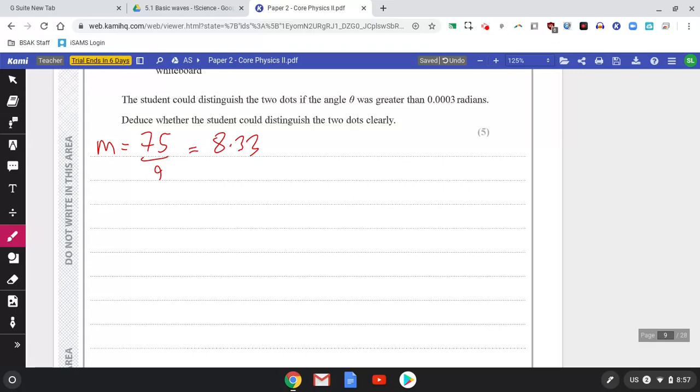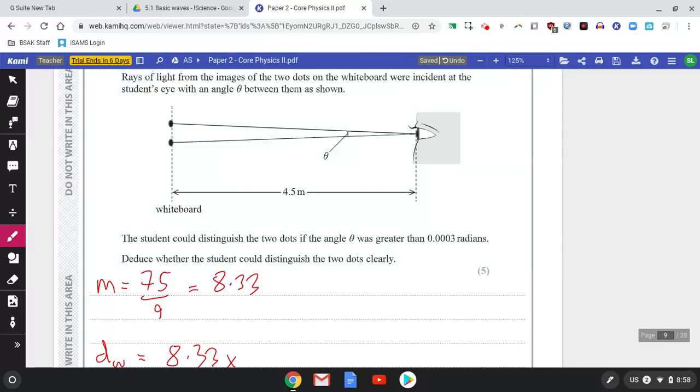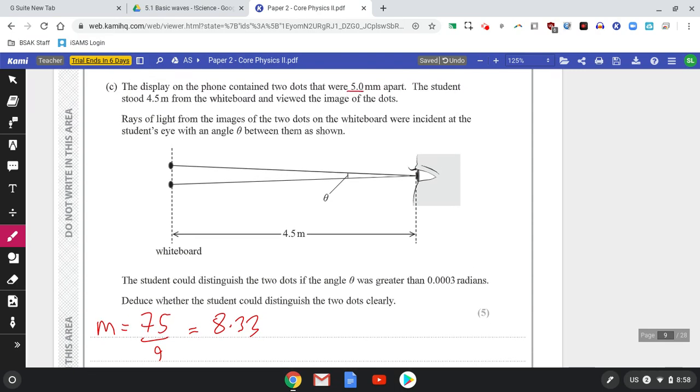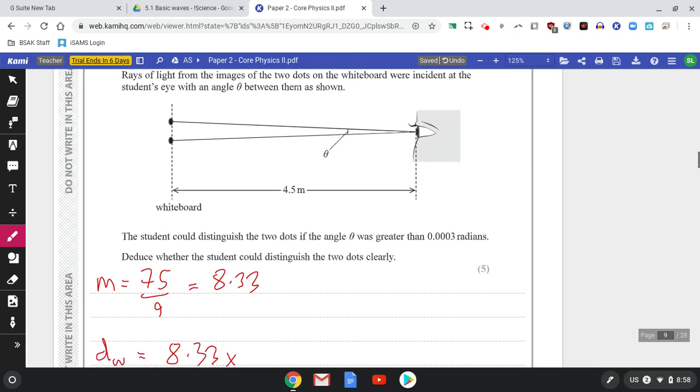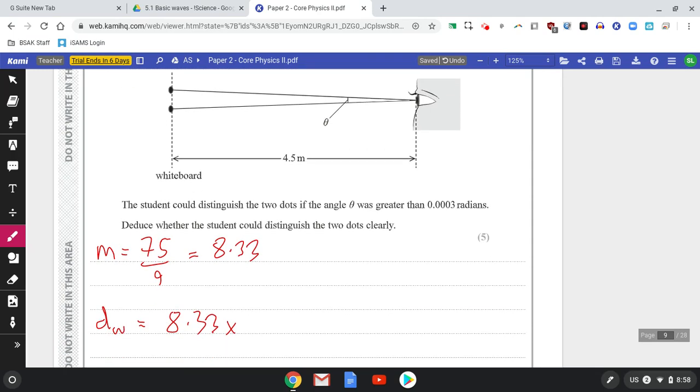So the distance between the two dots on the whiteboard is magnification multiplied by the original distance between them, which was five millimeters. On the phone they're five millimeters apart, so on the whiteboard they're going to be 5 times 8.33, which is 42 millimeters apart. Nice to get that into standard units.